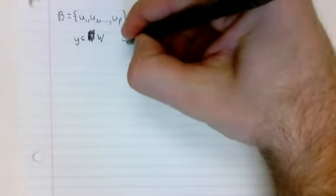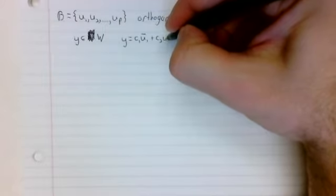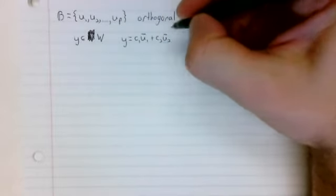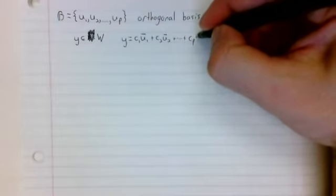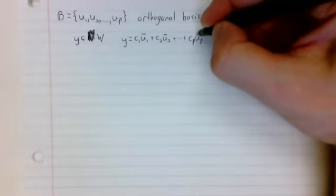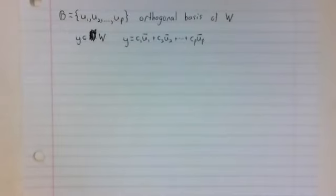Well, then y is a linear combination of these basis vectors. That's just what it means to be in the span of a set.